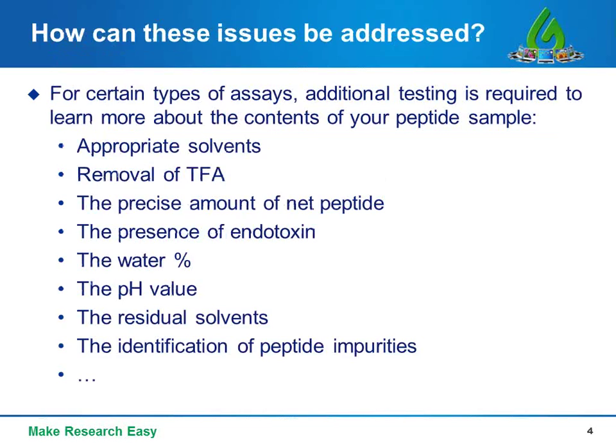There are other components in peptide samples apart from the target peptide, and variations between peptides delivered from different companies will ultimately give different results. Therefore, for certain types of assays, additional testing is required, including appropriate solvent removal of TFA, the precise amount of net peptide, the presence of endotoxin, the water percentage, pH value, residual solvent, and identification of peptide impurities.